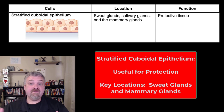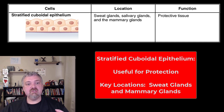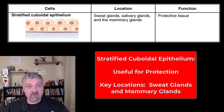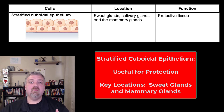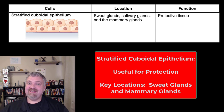Then we have stratified cuboidal epithelium. Remember stratified — think protection, so a little bit more protection here. These are pretty rare. Some of your sweat glands are going to have stratified cuboidal epithelium, and your mammary glands as well. Those are the key examples.